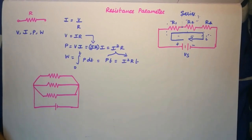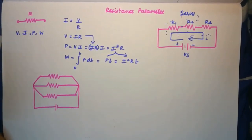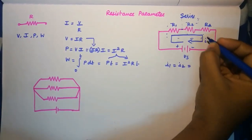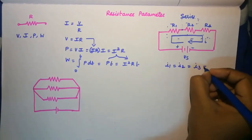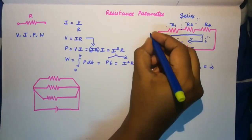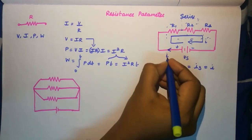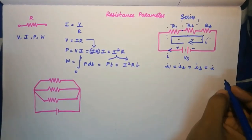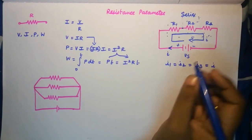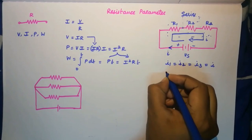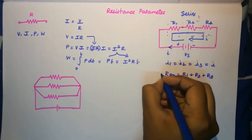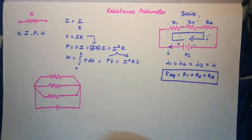Assume that there is some current I flowing through the circuit. We already know that the current flowing through a series circuit remains the same. So I1 through R1, I2 through R2, and I3 through R3 are all simply equal to I emerging from the voltage source. Therefore, the equivalent resistance is R_eq = R1 + R2 + R3.